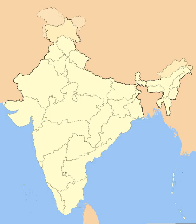Part A states, which were the former governor's provinces of British India, were ruled by an elected governor and state legislature. The nine Part A states were Assam, Bihar, Bombay, Madhya Pradesh (formerly Central Provinces and Berar), Madras, Orissa, Punjab (formerly East Punjab), Uttar Pradesh (formerly the United Provinces), and West Bengal.